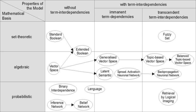1920s–1930s: Emanuel Goldberg submitted patents for his statistical machine, a document search engine that used photoelectric cells and pattern recognition to search the metadata on rolls of microfilmed documents. 1940s–1950s: In the late 1940s, the U.S. military confronted problems of indexing and retrieval of wartime scientific research documents captured from Germans. In 1945, Vannevar Bush's "As We May Think" appeared in Atlantic Monthly. In 1947, Hans-Peter Luhn, research engineer at IBM since 1941, began work on a mechanized punch card-based system for searching chemical compounds.